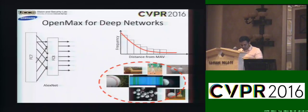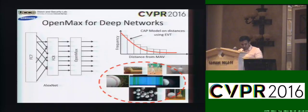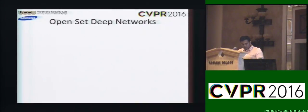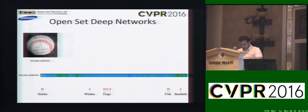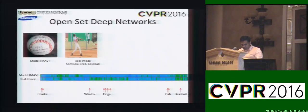For an input image, the OpenMAX algorithm measures the distance between the image and models for the top-N classes, adjusting the scores and providing an estimate of the image belonging to an unknown category. Consider the example of a baseball image: for a real image, both softmax and OpenMAX give high confidence. OpenMAX marks a fooling image — even one assigned high confidence by softmax — as belonging to an unknown category.